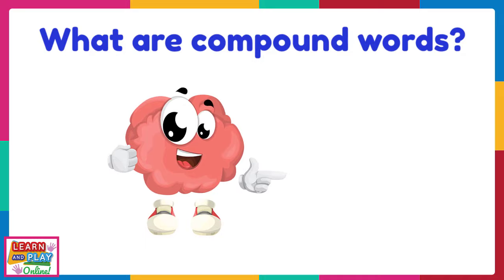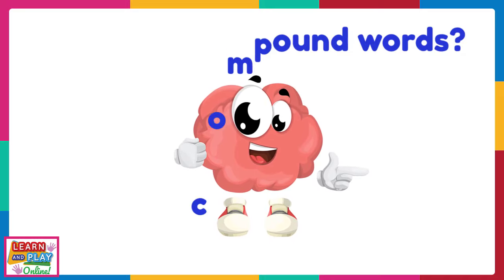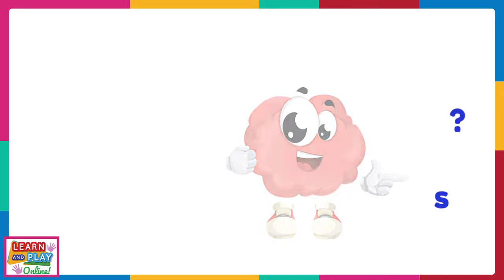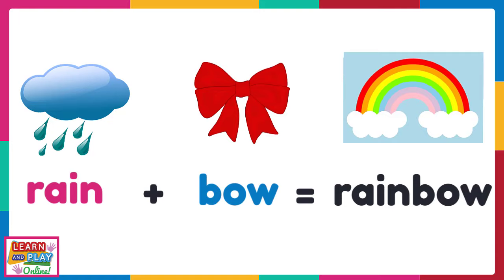Let's have a look at some examples of compound words. Here we have the word rain. Here we have the word bow. If we combine the two words we have a new compound word which is rainbow.